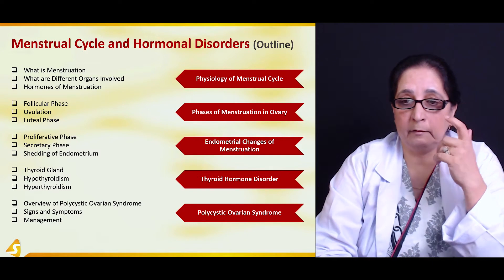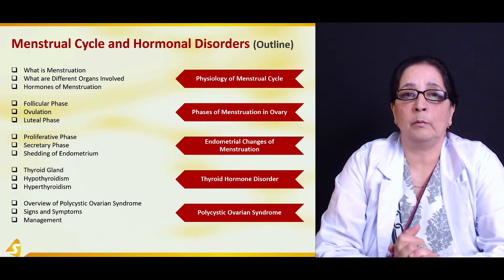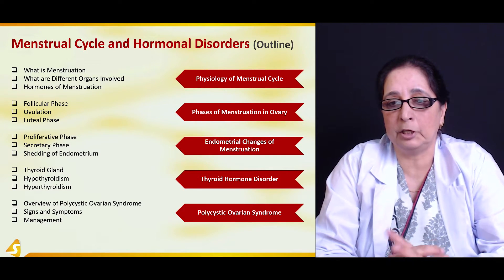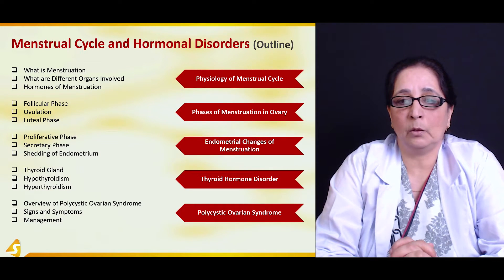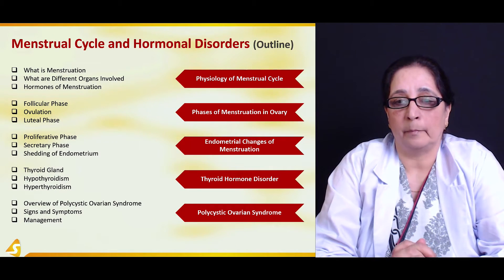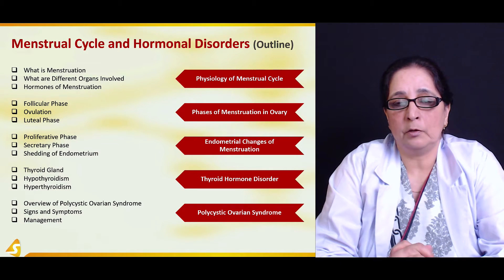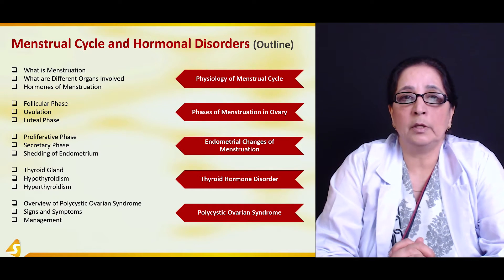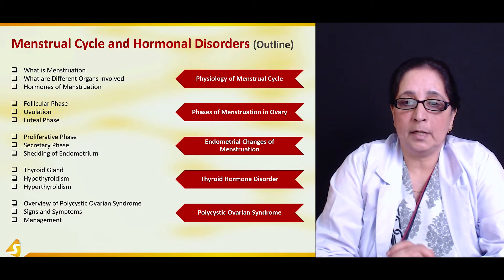Then in the final section we will talk about another very important hormonal disorder, very common in females of reproductive age, which is polycystic ovarian syndrome. We will talk about the overview of polycystic ovarian syndrome — how it appears and why it occurs.